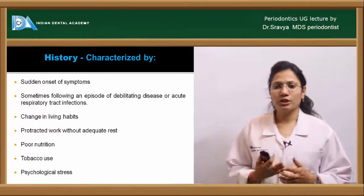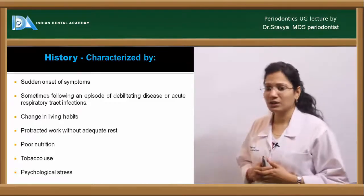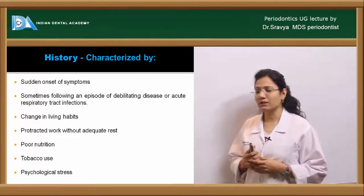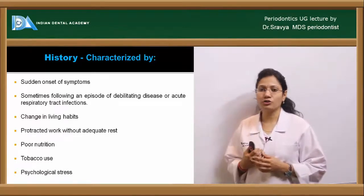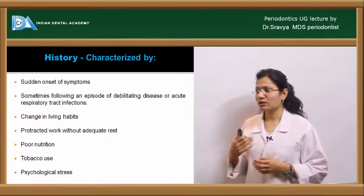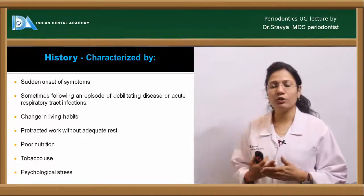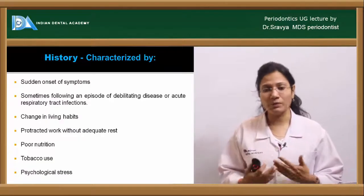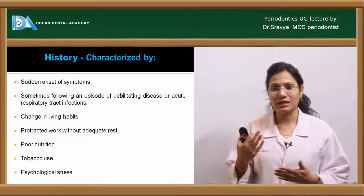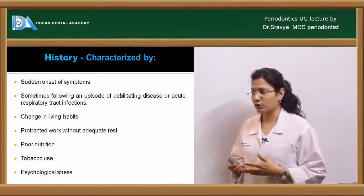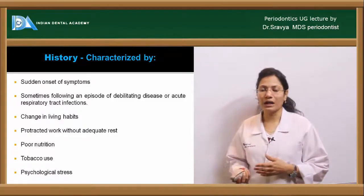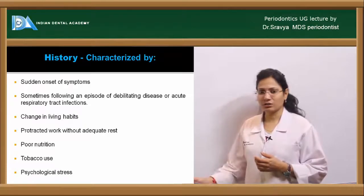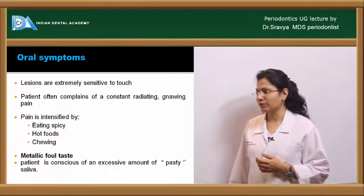The patient will usually give a history of symptoms that are sudden in onset, sometimes following an episode of debilitating disease or acute respiratory tract infections. History may also include changes in living habits, poor nutritional status, psychological stress, tobacco use, prolonged work, and inadequate rest.